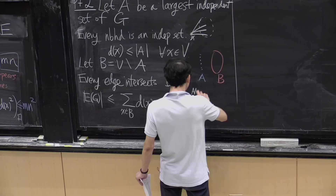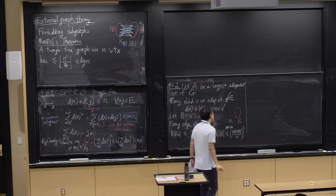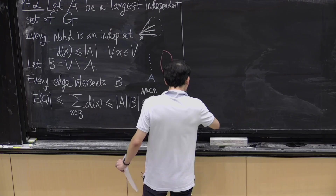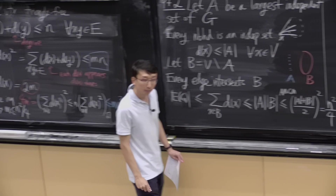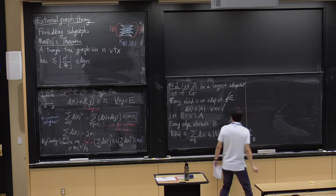By the AM-GM inequality, |A|·|B| is at most n squared over 4, since the sizes of A and B add up to n. So that gives you another proof of Mantel's theorem.